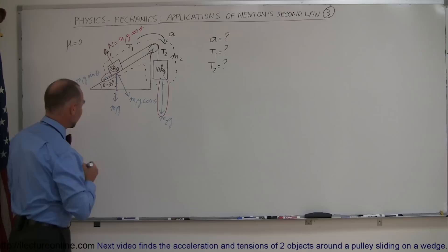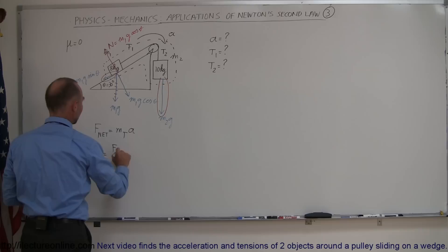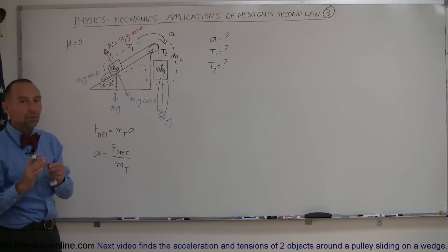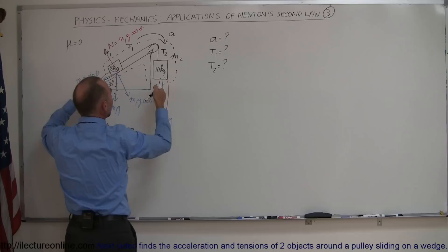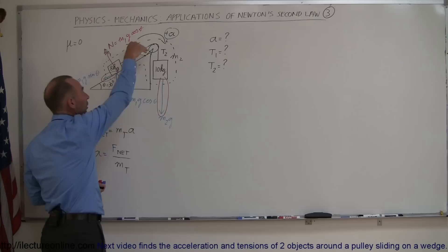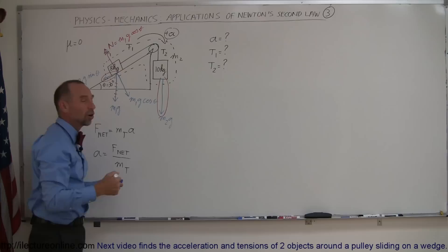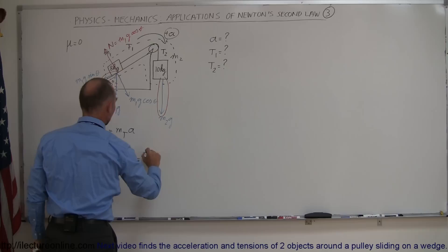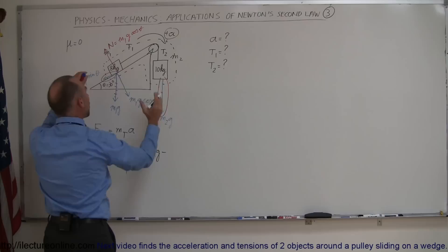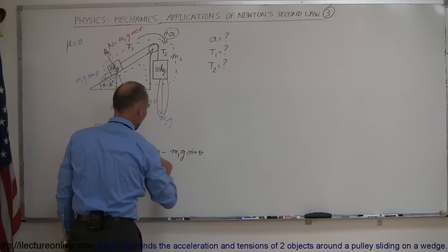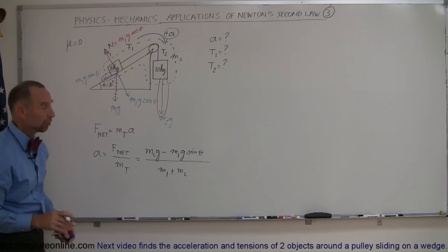Taking the assumed direction of acceleration as positive, we apply F_net equals M_total times acceleration, so acceleration equals F_net divided by M_total. Any force aiding the assumed acceleration is positive; any force opposing it is negative. So acceleration equals M2g minus M1g sine theta, all divided by M1 plus M2. That's how we find the acceleration of the whole system.